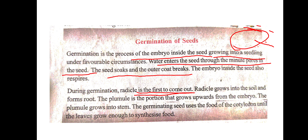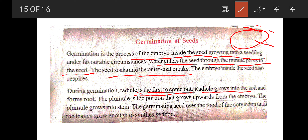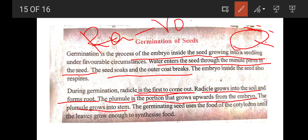The radicle grows into the soil and forms the root. The plumule grows upward from the embryo and grows into the stem. The radicle is the root of the plant.